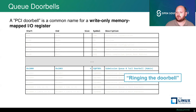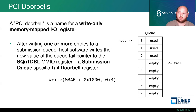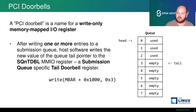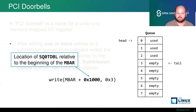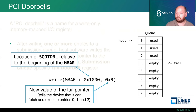When we write to a doorbell, we call it ringing the doorbell. When the host has written one or more entries to the submission queue, we kick the device by writing the new value of the tail pointer to this register. The value tells the device that entries have been inserted up to this point in the queue and it may now fetch them from its previously known head position. In this example, this tells the device it can fetch and execute entries 0, 1, and 2.